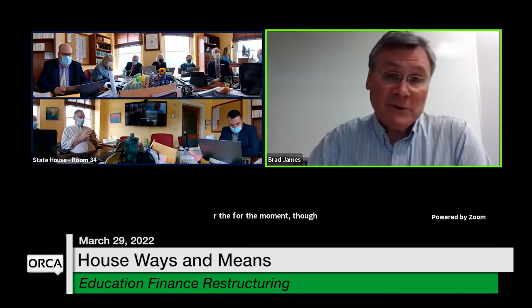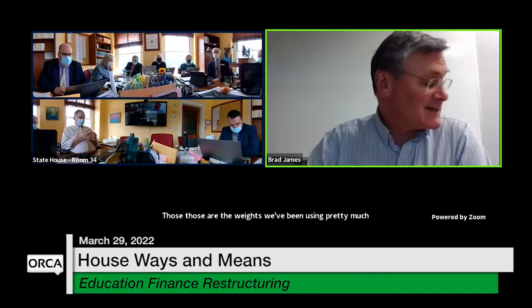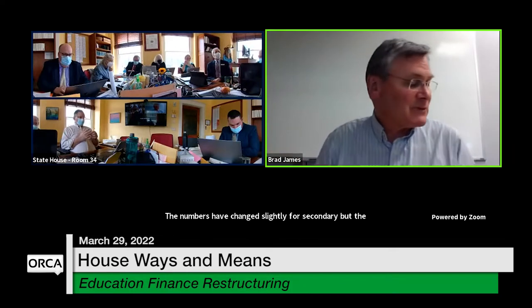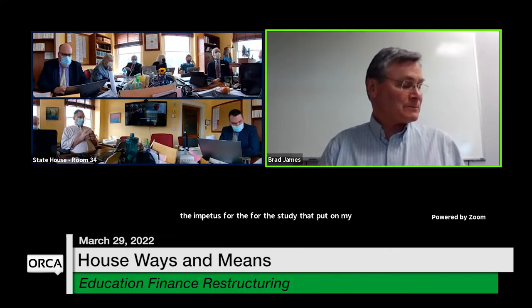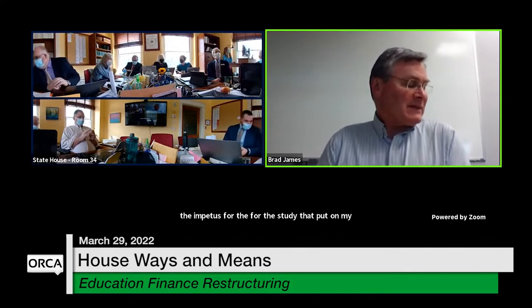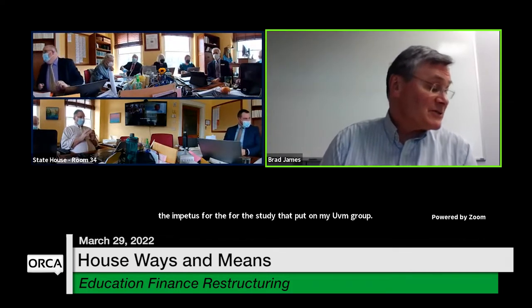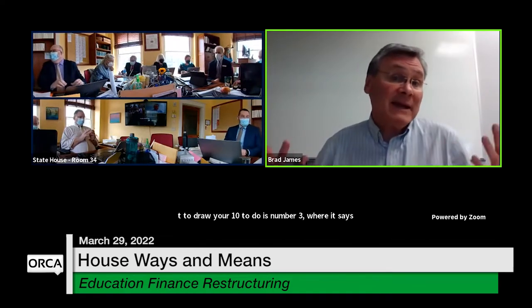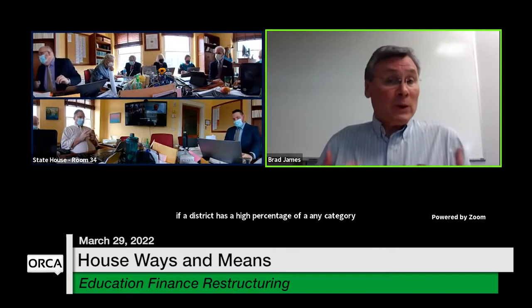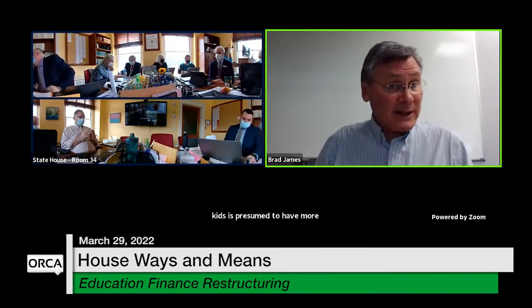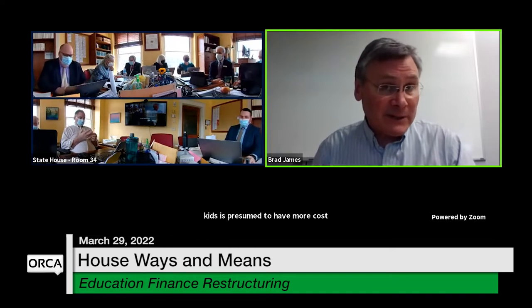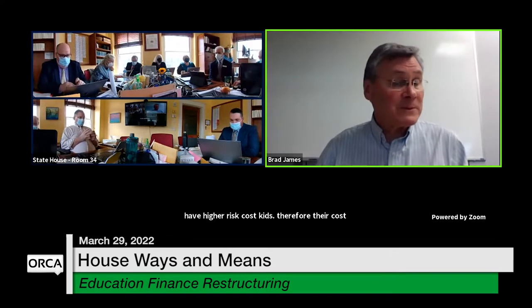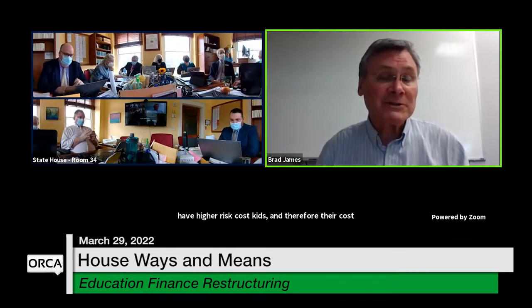Those weights have been used pretty much since I've been here — the numbers have changed slightly for secondary but others have stayed constant, which was part of the impetus for the UVM study. The key point is number three: if a district has a high percentage of any category of kids presumed to cost more, we'd expect they're budgeting higher for those kids, and therefore their cost per pupil is high. As we all know, your homestead tax rate is directly proportional to your cost per pupil.